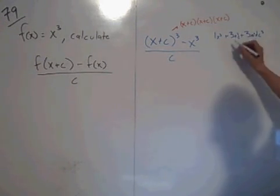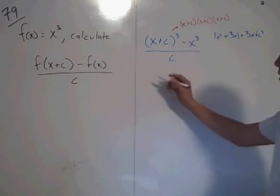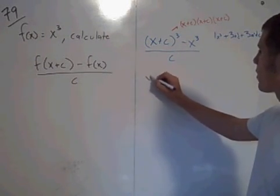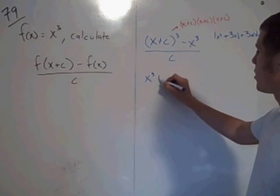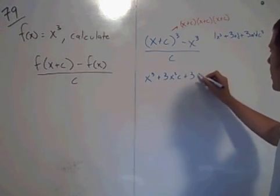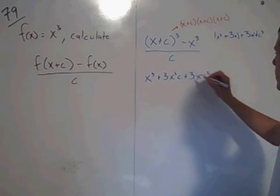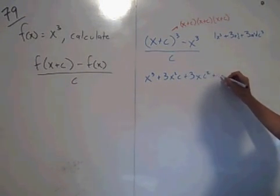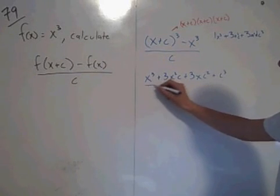Then you have pluses here. So this is x cubed plus 3x squared c plus 3x c squared plus c cubed. This is over c.